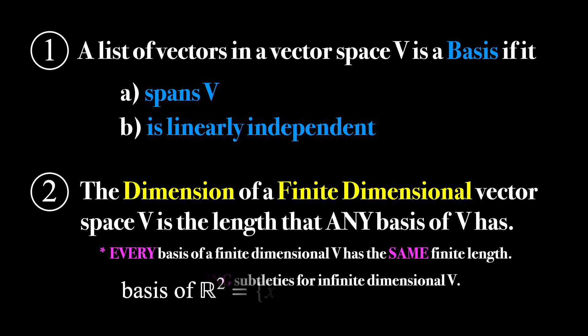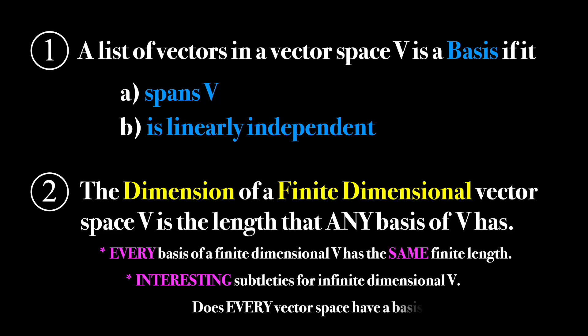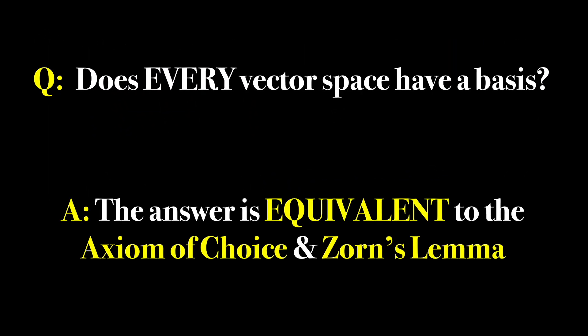However, there are some very interesting subtleties that arise when trying to define a basis for an infinite dimensional vector space. In fact, the question of whether every vector space actually has a basis is the source of an extremely fascinating connection between linear algebra and mathematical logic. The answer to this simple question turns out to be equivalent to two concepts known as the axiom of choice and Zorn's lemma. In the next video I make for this playlist, I will go into detail about this connection, so be sure to stay tuned.